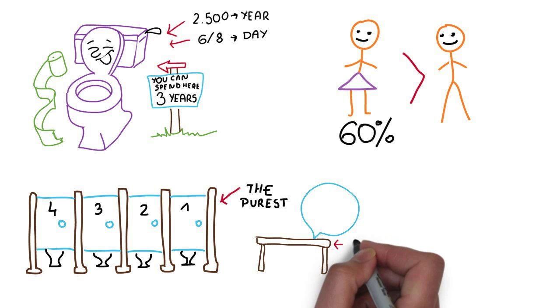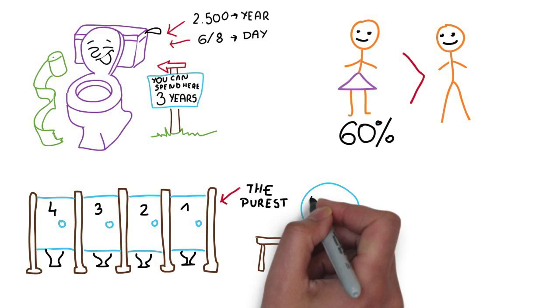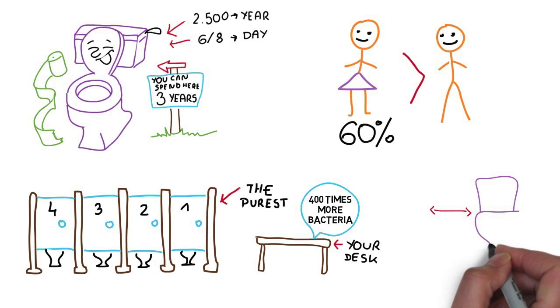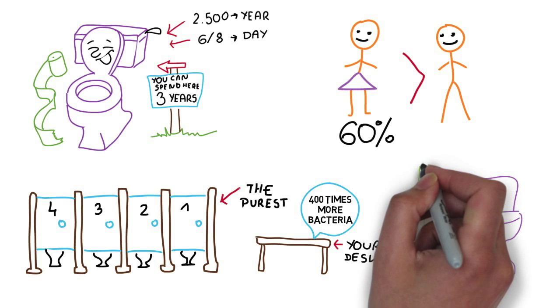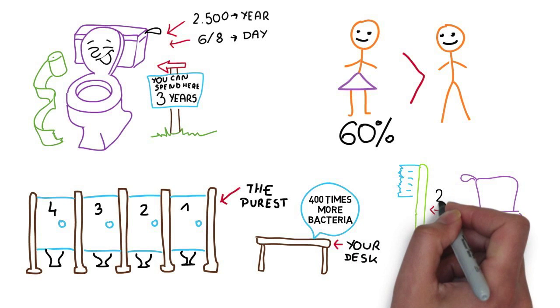Actually, your desk has 400 times more bacteria than the average toilet seat. Also dentists have recommended that a toothbrush should be kept at least 6 feet away from a toilet.